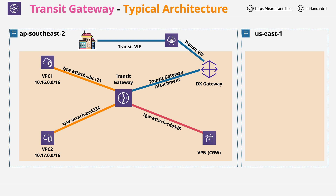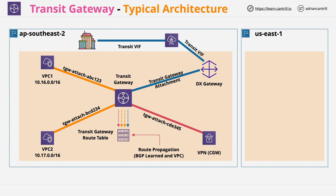The Transit Gateway for all of these attachments has a default route table, which is populated with any routes learned from the attachments. For the VPCs, this is the CIDR ranges of those VPCs. For the VPNs, it's the routes learned using BGP over the VPN. And for a DX gateway and Transit Gateway attachment, you define the networks within the attachment configured at the DX gateway side. It's important to understand that this default route table has, by default, all routes which the Transit Gateway learns about.